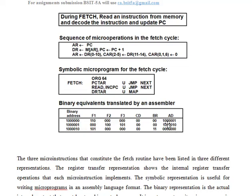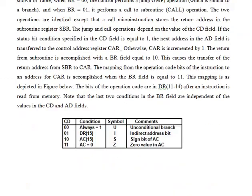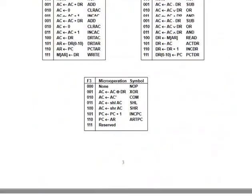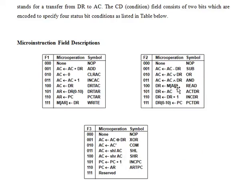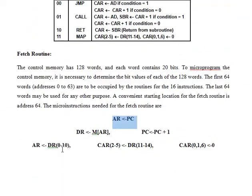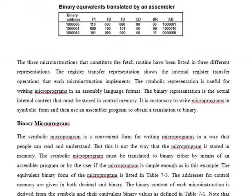Similarly, for the second micro instruction, F1 value is all 0, F2 value is 100, and F3 value is 101. Looking up F2 = 100, this transfers the address from PC to AR and goes to memory. F3 = 101 loads the value into DR (which represents IR). CD is 00 and BR is 00, meaning the condition is always true and we jump to the next line.